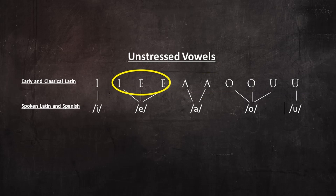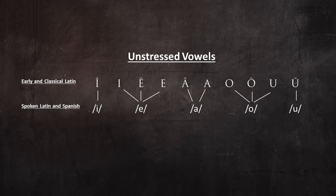Observe that in Vulgar Latin, short I merged with long and short E, and short U merged with long and short O. Atonic vowels were treated differently depending on where they fell in a word. Let's take a look at a few different scenarios.